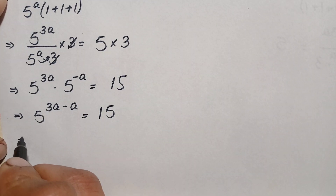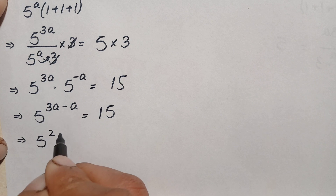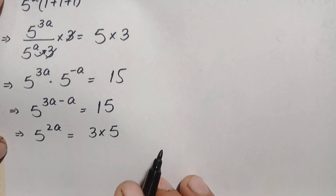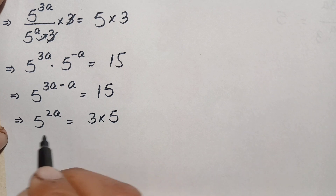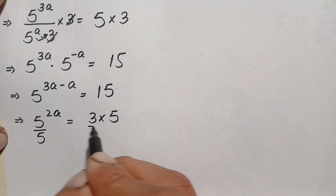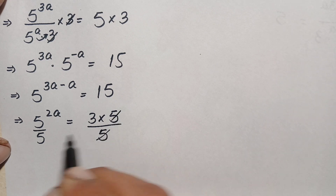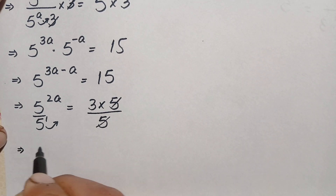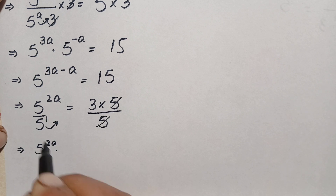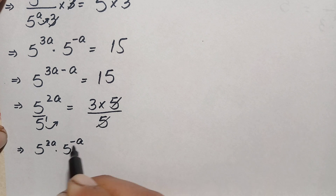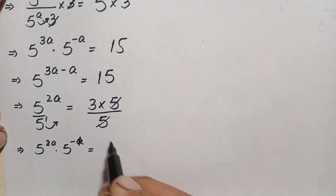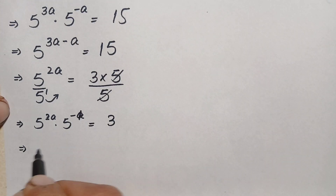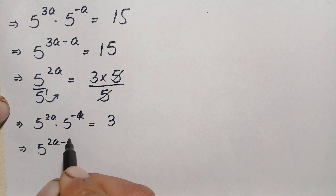Next, we can write 5 raised to power 3a minus a, which is simply 5 raised to power 2a, equal to 15. We rewrite 15 as 3 times 5. Now 5 and 5 are divisible by 5, so we divide both sides by 5. The 5s cancel, and the power of this 5 is 1, so moving it to the numerator gives 5 raised to power negative 1. This equation becomes 5 raised to power 2a times 5 raised to power negative 1 equals 3. Adding the powers on the left hand side gives 5 raised to power 2a minus 1, equal to 3.